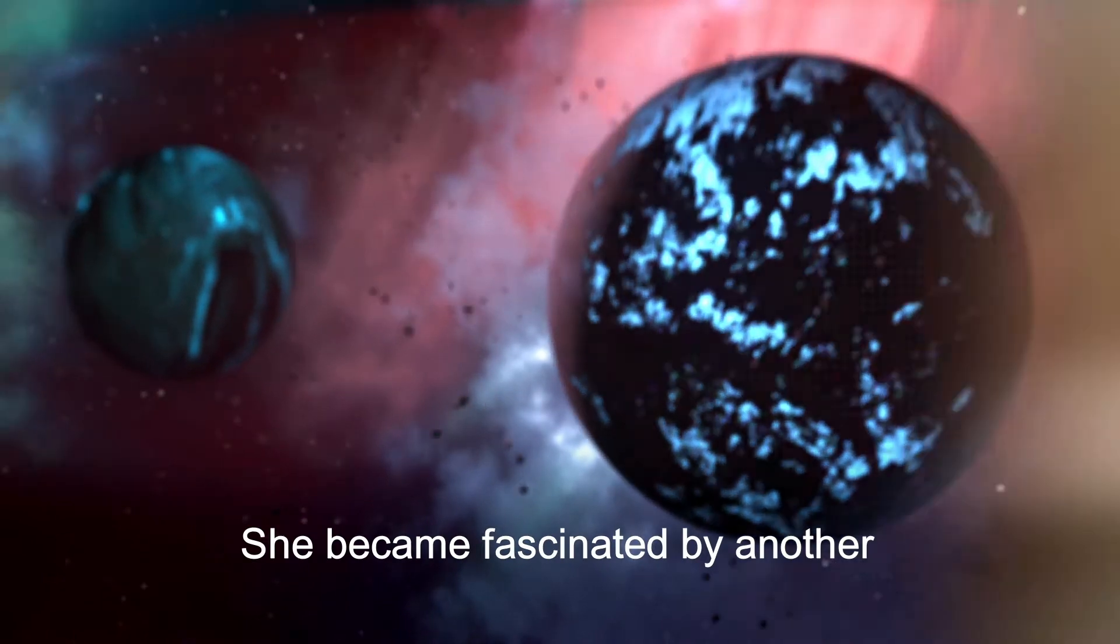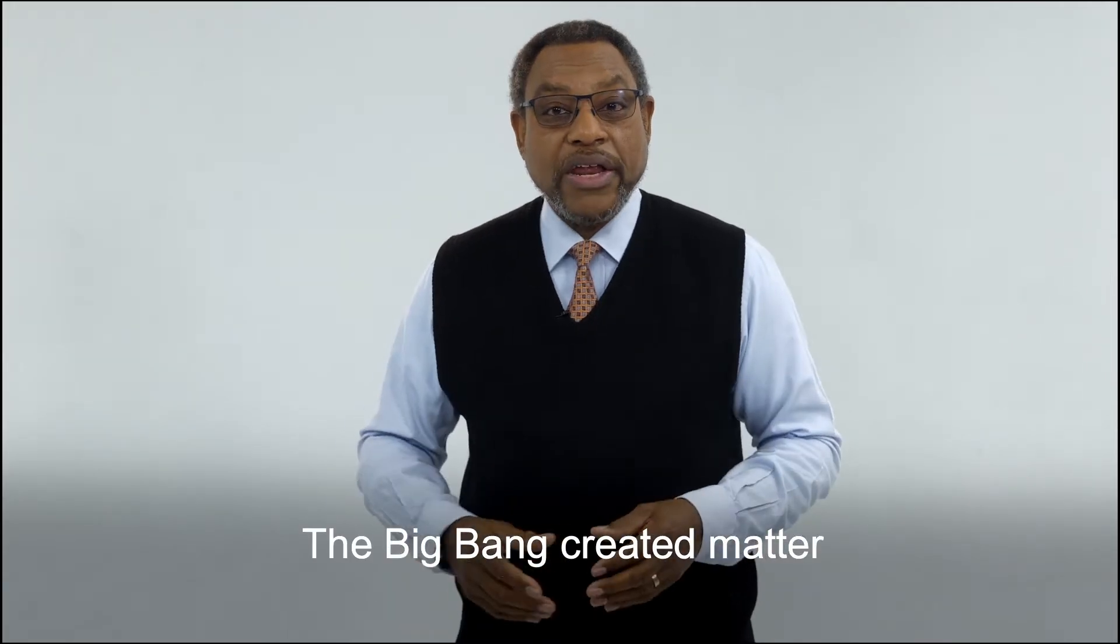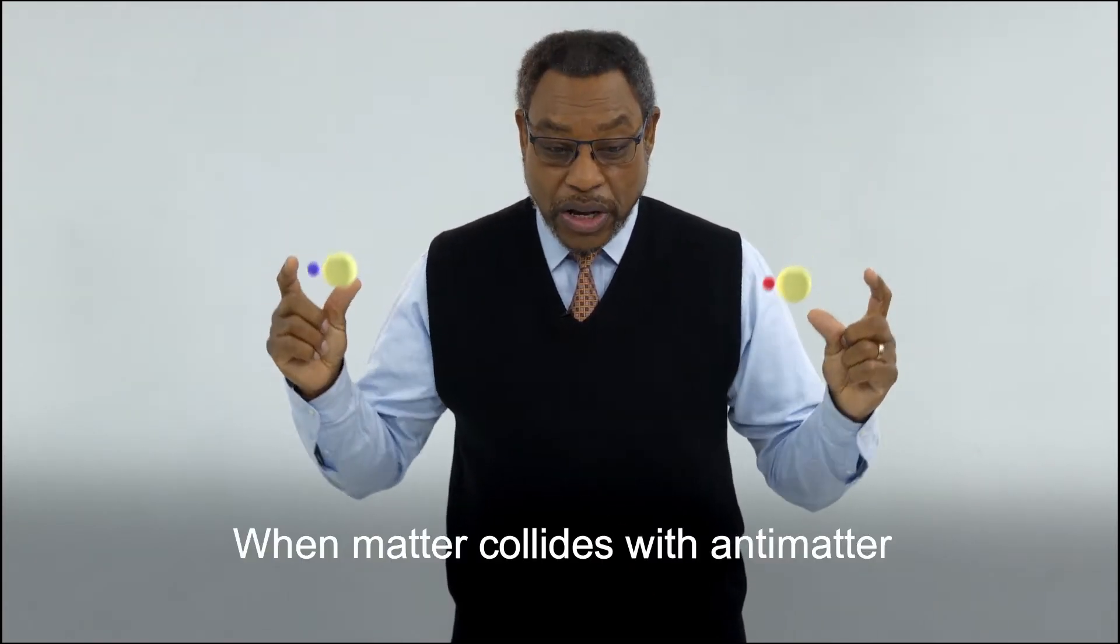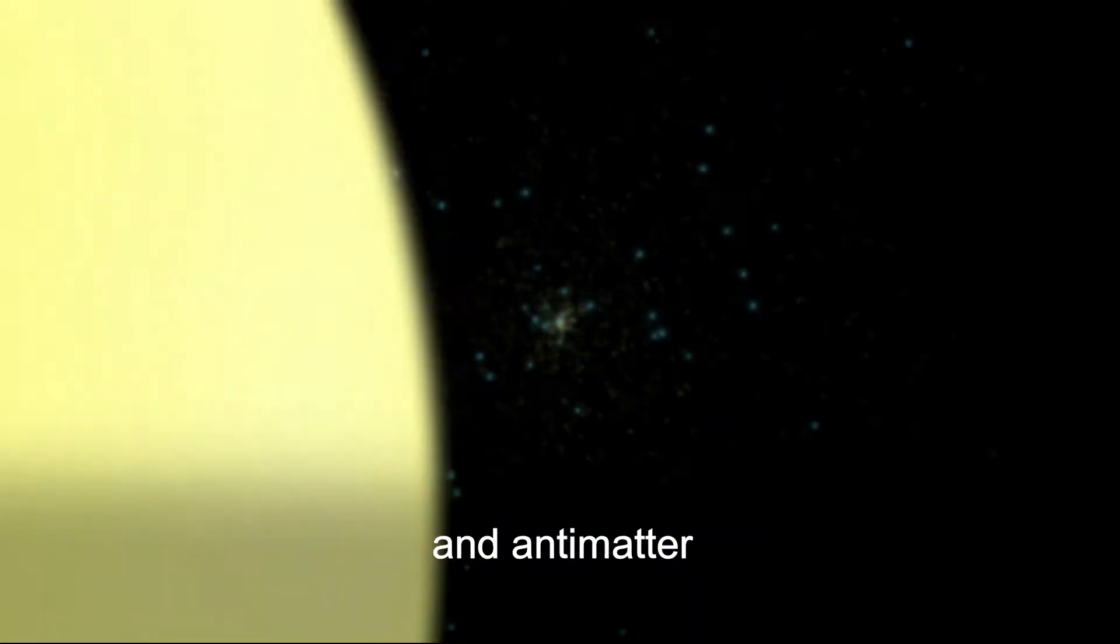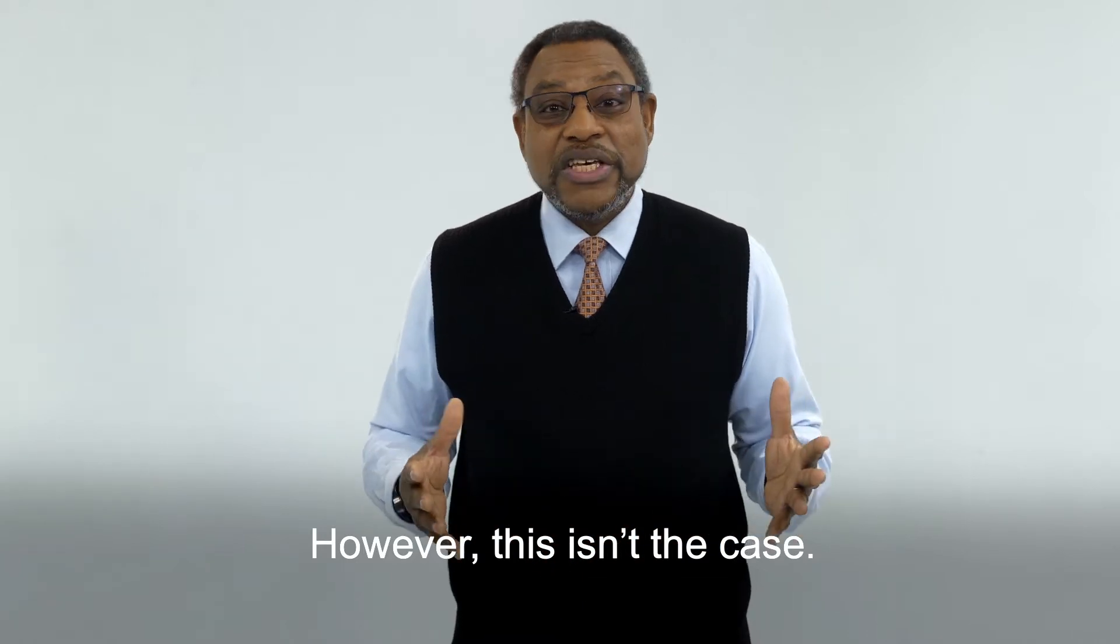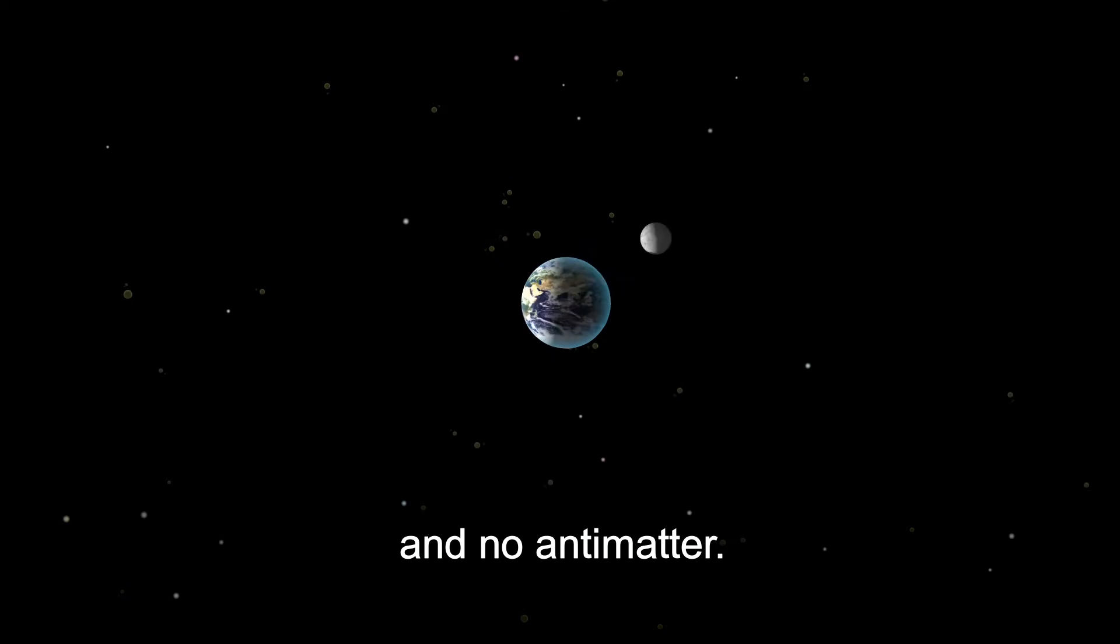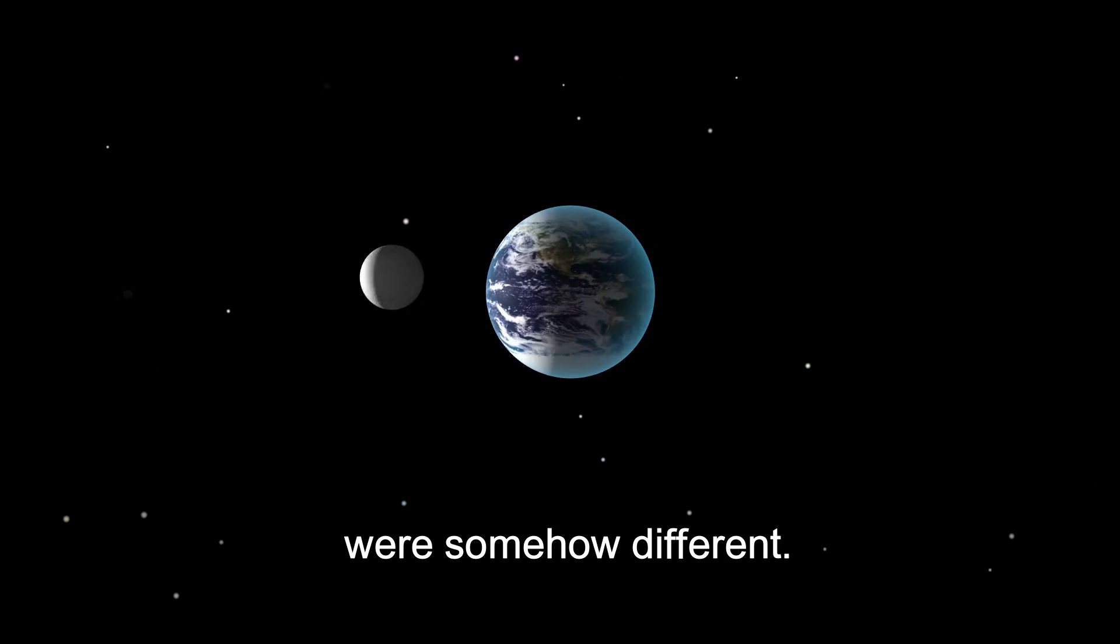But Quinn wasn't done. She became fascinated by another mystery of the early universe. The Big Bang created matter and its mirror opposite, antimatter. When matter collides with antimatter, the two atoms explosively annihilate each other. Because the Big Bang created matter and antimatter in perfectly equal amounts, there should be nothing left of either today. However, this isn't the case. The universe is filled with regular matter and no antimatter. Quinn knew this could only happen if the laws of physics for matter and antimatter were somehow different.